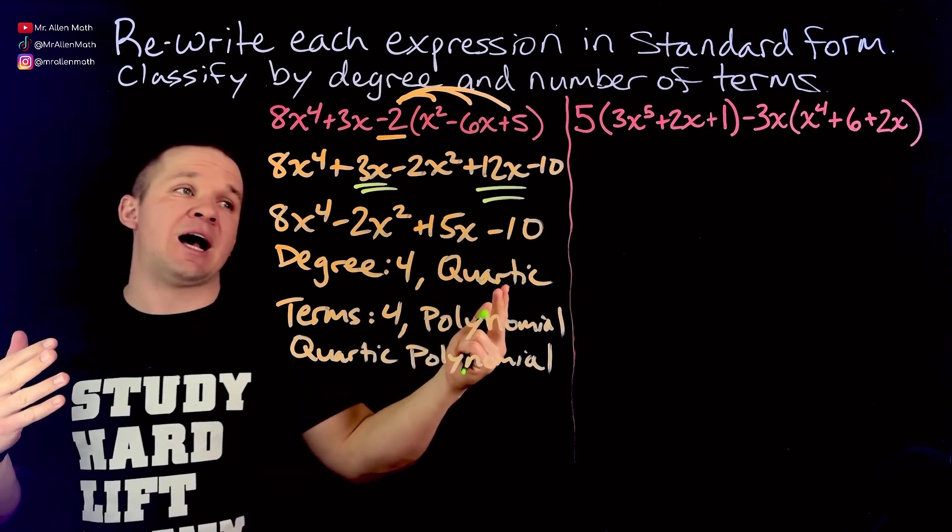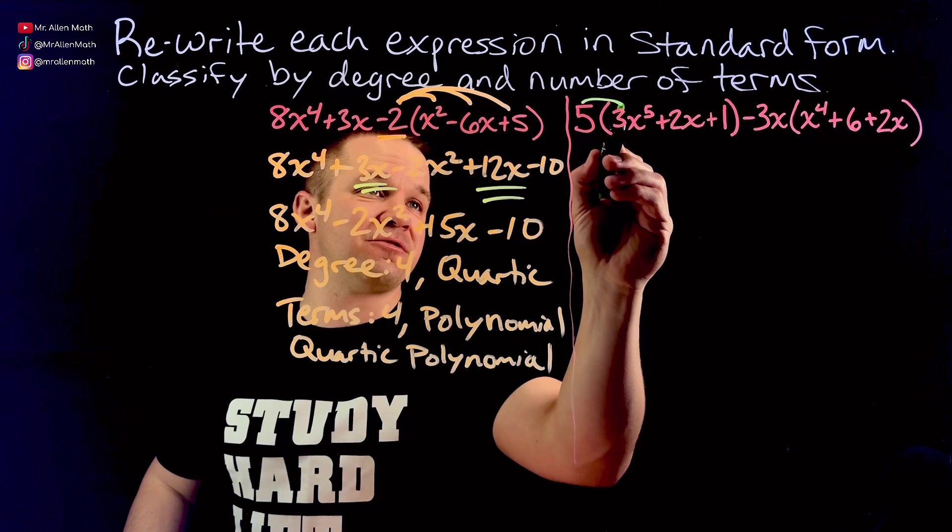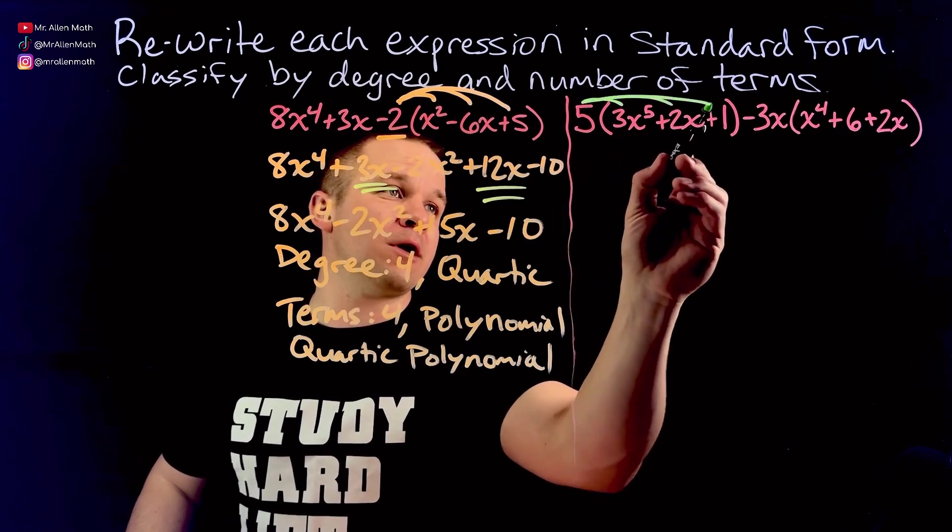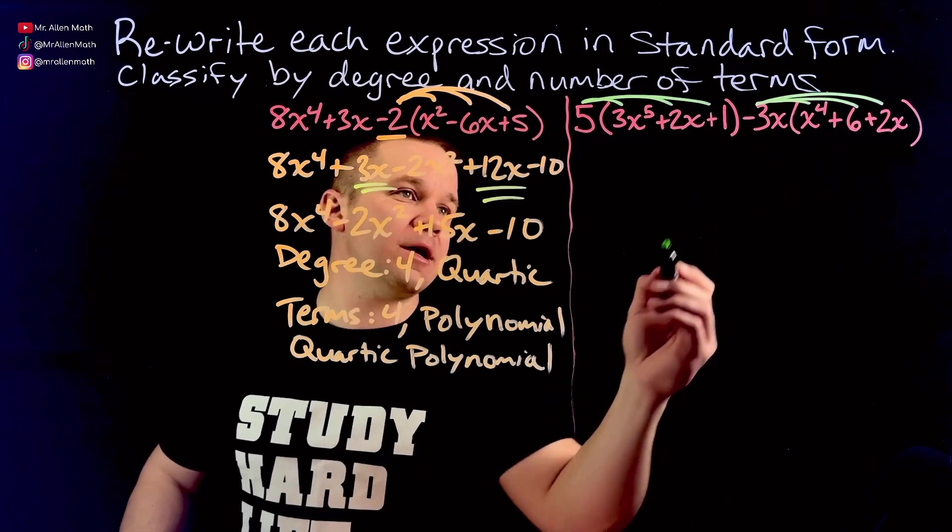And then we have four terms, so that's four, this will just be considered a polynomial. So quartic polynomial is the name. Again beyond three terms, so it's monomial, binomial, trinomial, after that we just generically polynomial. And the same goes with the degrees.